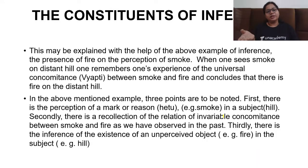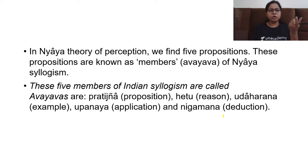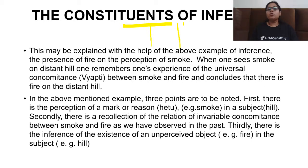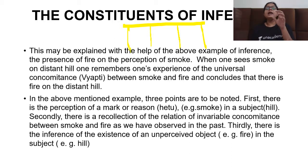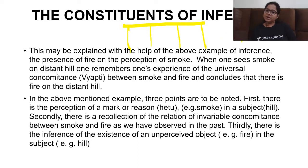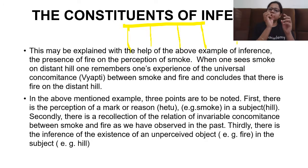There are some constituents of inference — you can also call them elements. You can write these in columns: Hindi word, English word, Sanskrit word, and example. Make a chart with these columns so it becomes easy to learn. This chart is important because you will read the constituents in multiple parts.